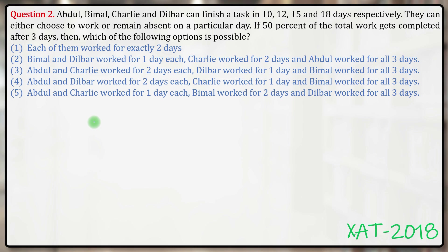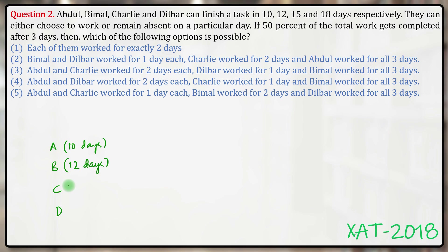Before proceeding further, let me quickly note down what is given. There are four people: Abdul, Bimal, Charlie, and Dilber. Abdul takes 10 days to complete a piece of work, Bimal takes 12 days, Charlie takes 15 days, and Dilber takes 18 days to complete the same work.